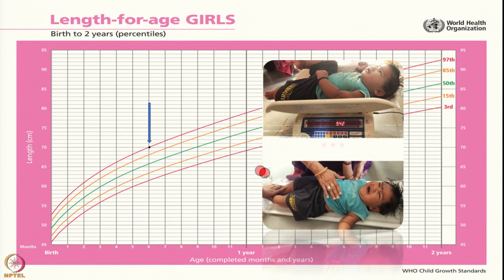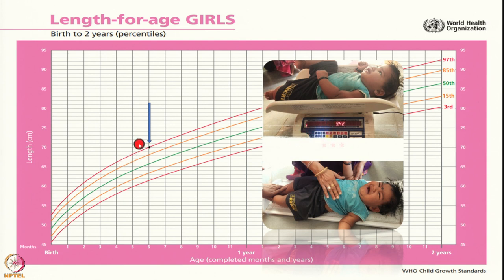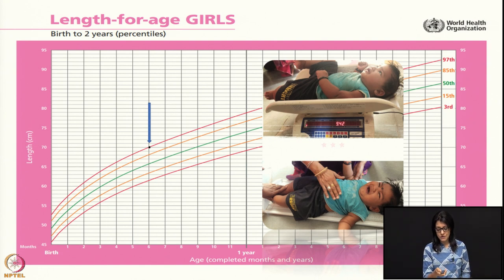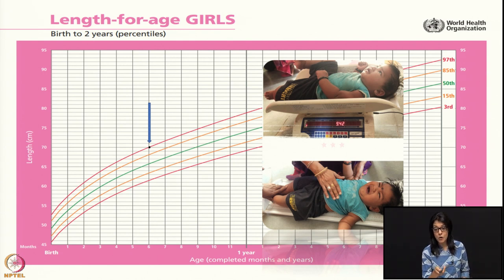This is a girl child I showed in one of my earlier presentations — only six months old, and this is her length-for-age. Because this child had beautiful milk transfer in the first six months, her length is at the 97th percentile — only 3 percent of children her age are this tall, and she is a tribal child. Her weight is 9.42 kg; she was growing beautifully on mother's milk, catching up on growth with full potential in length.